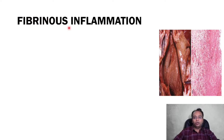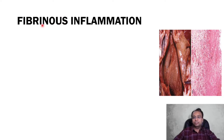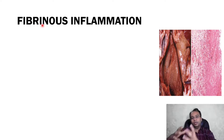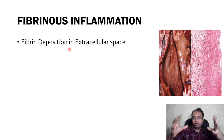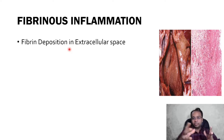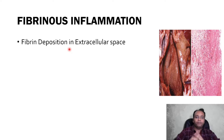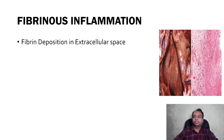The third morphological pattern of acute inflammation is fibrinous inflammation. The name itself suggests fibrinous means fibrin material deposition. Here there will be fibrin deposition in the extracellular space, surrounding the cells. This fibrin material deposition is why the name fibrinous inflammation is given. This is the fibrinous material deposition.